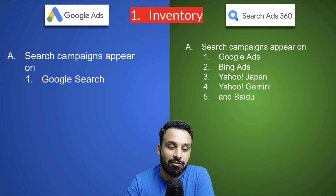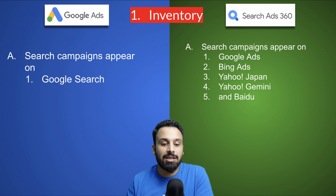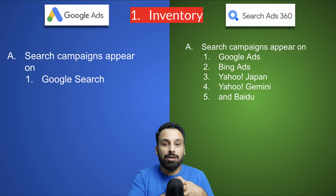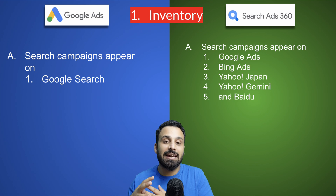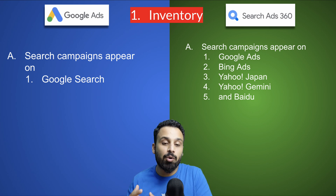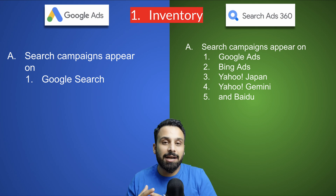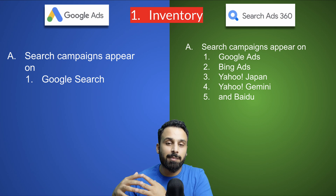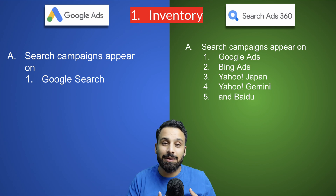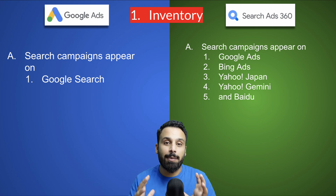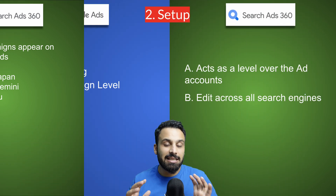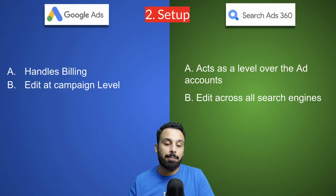Our first difference is about inventory — what kind of inventory is available in each platform. In Google Ads, you can run search campaigns only on Google Search and its partner websites. However, in Search Ads 360 you can create search campaigns that run on most search engines, including Google Ads, Bing Ads, Yahoo Japan, Yahoo Gemini, and Baidu. If you are running campaigns on multiple search engines separately, Search Ads 360 lets you centralize all of them in one platform.